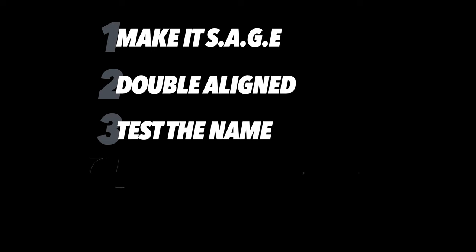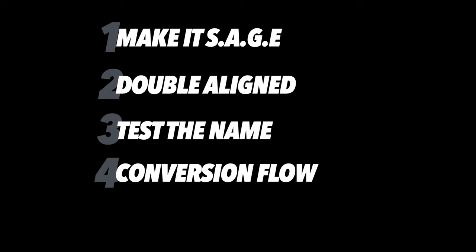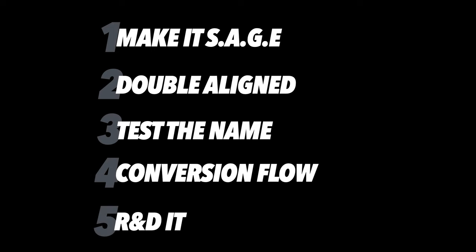Quick review on the five strategies to build a beacon lead magnet that attracts ready-to-buy buyers. Number one: it has to be SAGE — short, actionable, goal-oriented, and easy. Number two: double aligned — both the pain the customer has and the problem your product solves. Number three: test the name with an email list. Number four: your conversion flow — use the funnel. Number five: R&D your competitors.